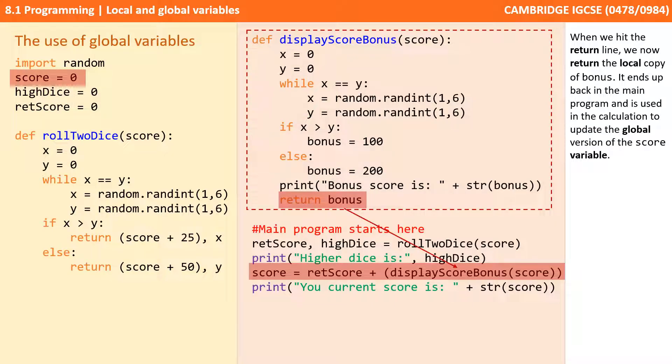When we hit the return line, we now return the local copy of bonus. It ends up back in the main program and is used in the calculation to update the global version of the score variable.